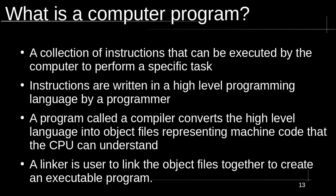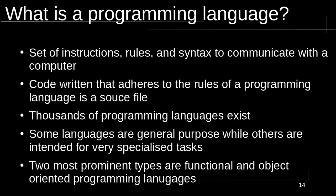Now that we've got all the housekeeping out of the way, let's get started. Since this is a course for beginners, I need to talk briefly about computer programs. A computer program is a collection of instructions that the CPU can execute to accomplish a task. The instructions are written in high-level programming languages such as C. A program called a compiler converts this high-level language into object files or machine code. We then use a program called a linker to package these object files together into a single binary file that we can run as an executable program.